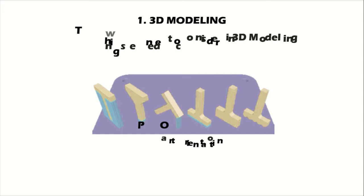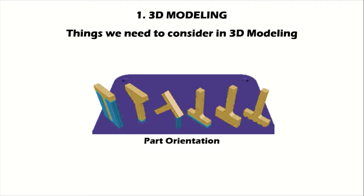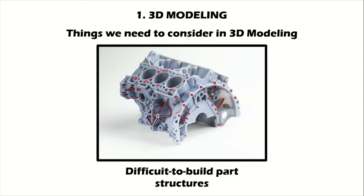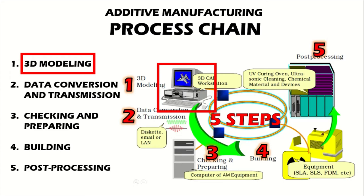Things we might need to consider are: what will be the orientation of the part, because support structure material consumption is different for different orientations. Do we need any support structures for our model? Is it difficult to build certain part structures such as thin walls, small slots or holes, and overhanging elements? The problem is usually more complex than one can imagine because there are many different 3D printing machines with different printing techniques, each having their own requirements and capabilities. After acquiring the 3D CAD model, the next step is data conversion and transmission.